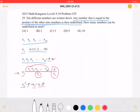So, plus or minus means what? There are two possible values for x sub n, which means that answer choice B must be correct. There are two numbers that can be underlined at most.